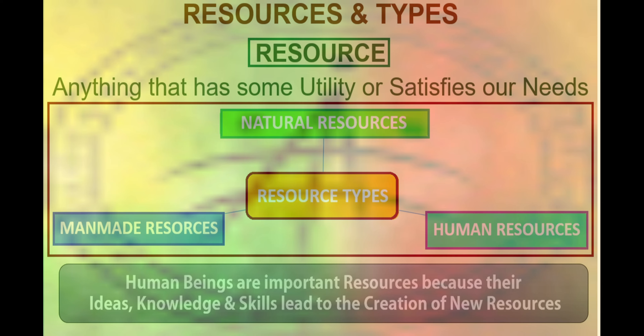Resources are anything that has some utility or satisfies our need. These resources can be classified into three major groups: natural resources, man-made resources and human resources. Natural resources are resources that exist without any action of humankind. Common examples of natural resources are air, sunlight, water, soil, stone, plants, animals and fossil fuels.